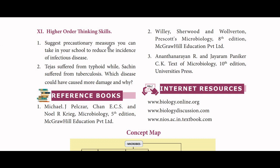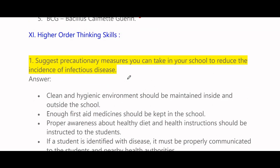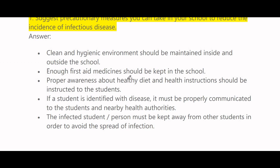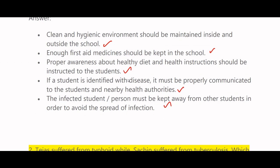Higher order thinking skills. Suggest precautionary measures to reduce the incidence of infectious disease in your school. A clean and hygienic environment should be maintained inside and outside the school. Enough first aid medicines should be kept. Proper awareness about healthy diet and health instruction should be given to students. If a student is identified with a disease, it must be communicated to the students and nearby health authorities.